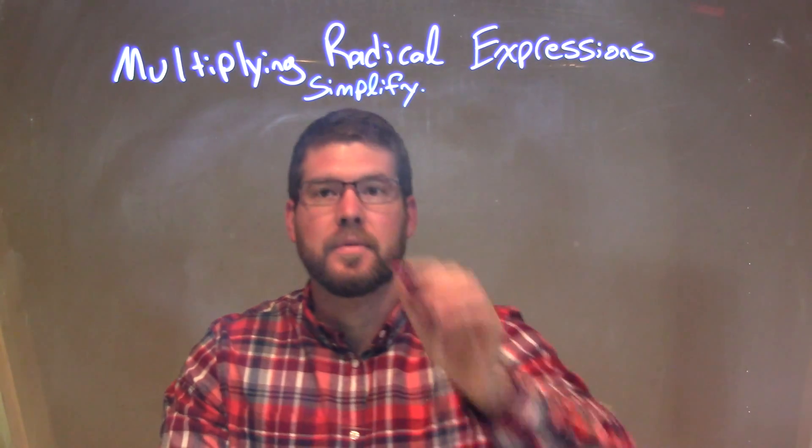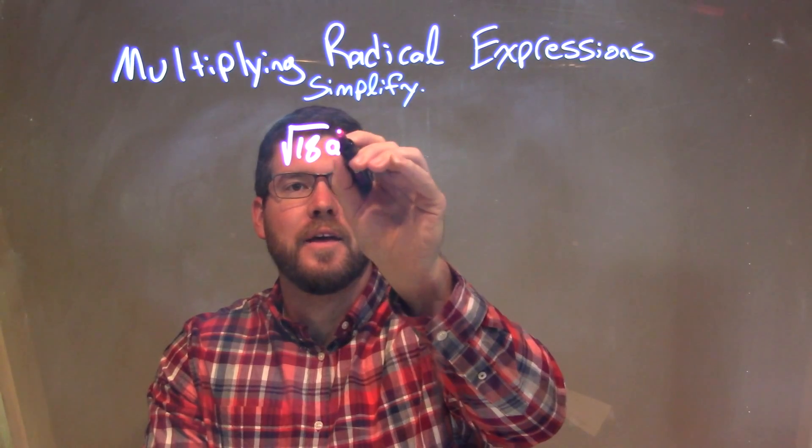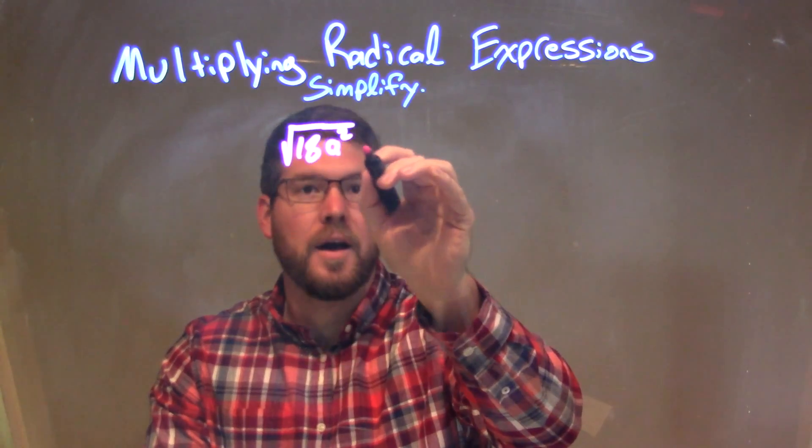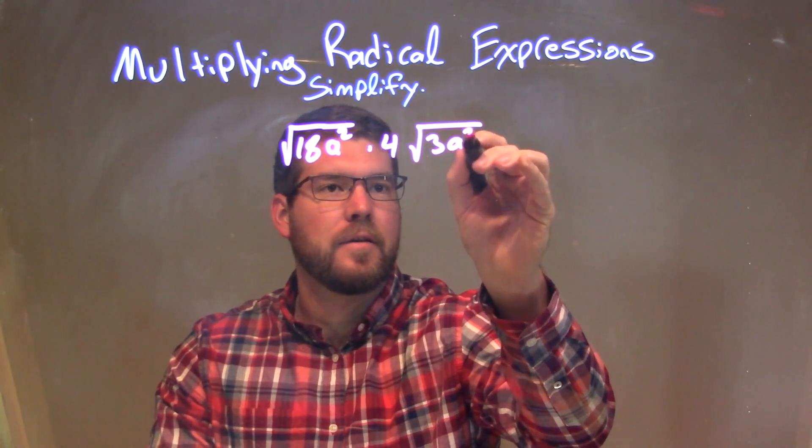So if I was given this expression, the square root of 18a² times 4 square root of 3a².